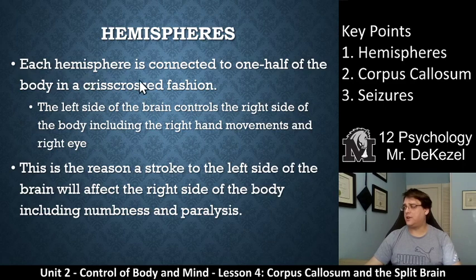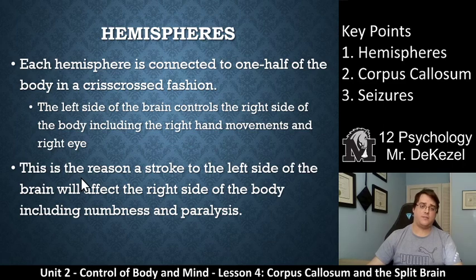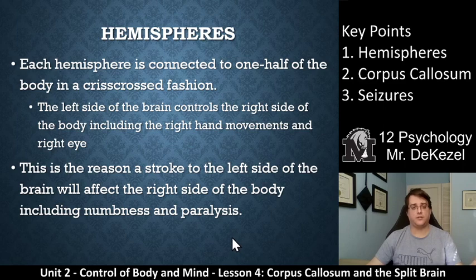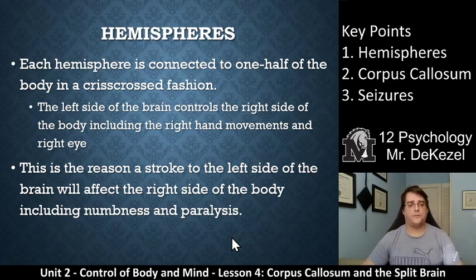Each hemisphere is connected to one half of the body in a crisscrossed fashion. The left side of the brain controls the right side of the body, including the right hand, and it takes information from the right eye and the right ear. This is why a stroke to the left side of the brain will affect the right side of the body, including numbness and paralysis. So your right brain controls the left side of your body and your left brain controls the right side — that's why a stroke always affects the opposite side from where the damage is.